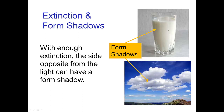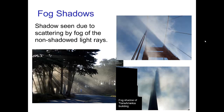Also in something like milk, the side of the milk away from the light source will be darker — this is a form shadow due primarily to scattering. Another type of shadow occurs when an object blocks light passing into a scattering volume. In this case, trees are casting shadows into fog, and we see these rays or fog shadows.